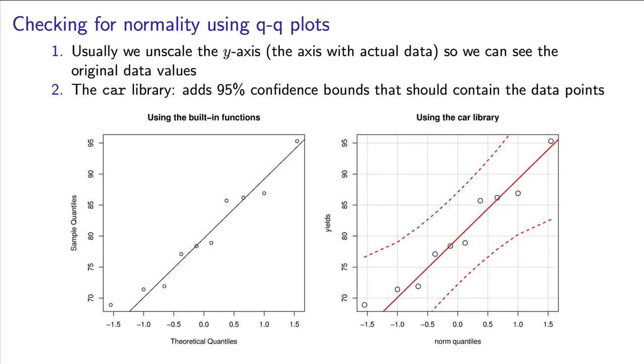Lastly, with some theoretical work behind the scenes, we can find bounds around that diagonal line. These bounds are 95% confidence bounds, indicating that 19 out of 20 points should fall within the limits. Even truly normally distributed data would have some points lying outside the bounds.